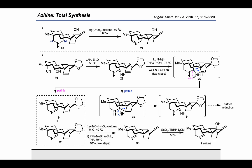Based on compound 32, two-step manipulation afforded compound 33 in 91% yield. And after allylic oxidation, azitin was synthesized using five steps from the advanced intermediate.